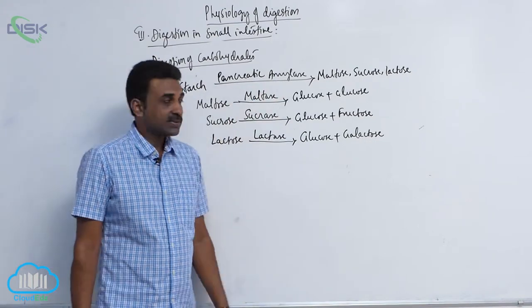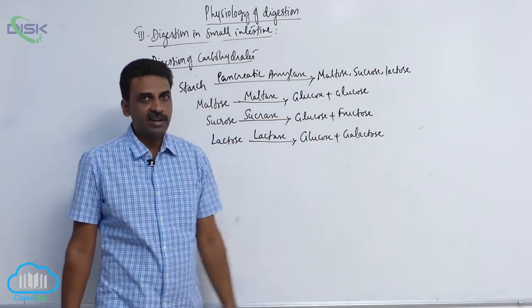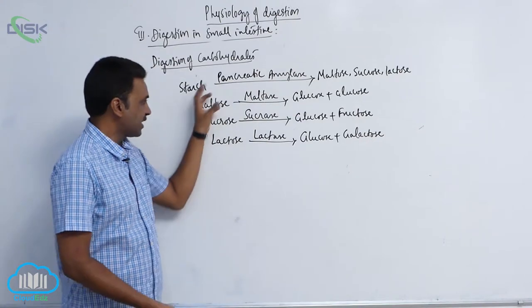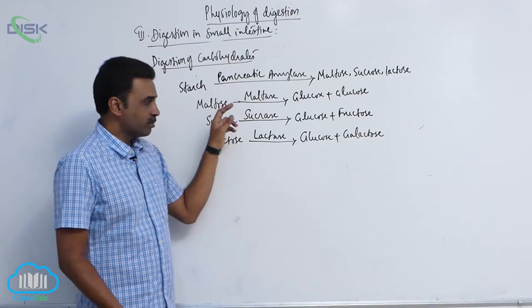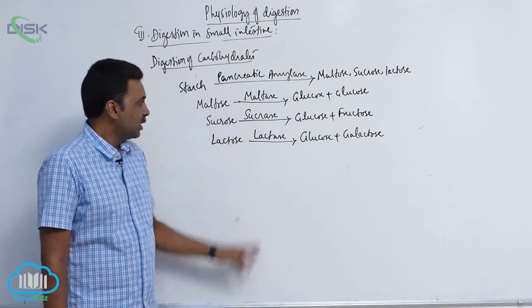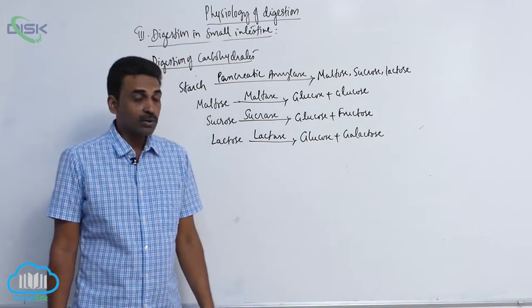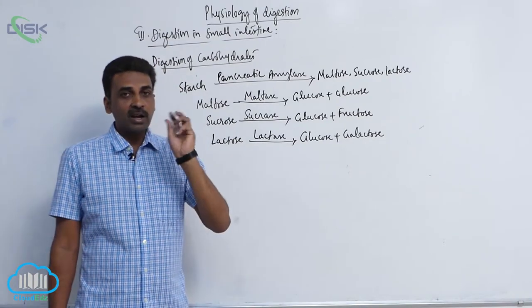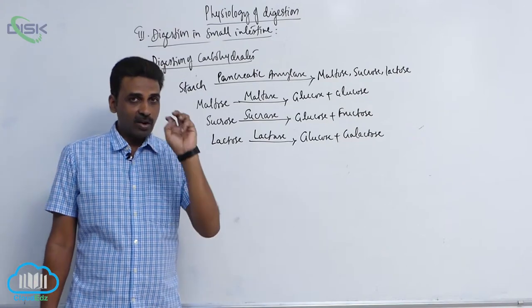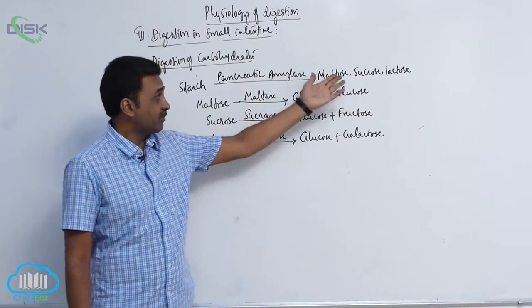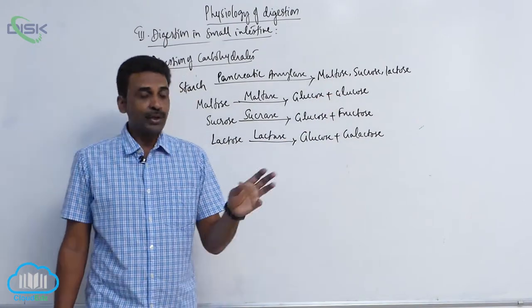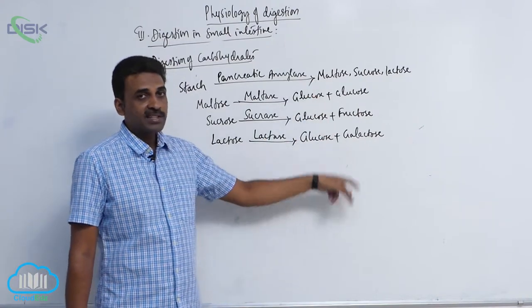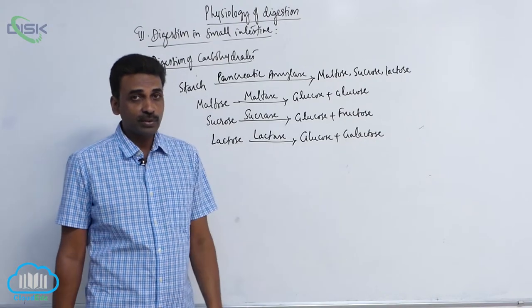Pancreatic amylase from the pancreas converts starch into disaccharides — maltose, sucrose, and lactose. Their respective enzymes in intestinal juice then act on those substances: maltase produces glucose and glucose; sucrase produces glucose and fructose; lactase produces glucose and galactose. Carbohydrate digestion is completed when complex starch is first converted into disaccharides and finally into simple sugars — glucose, fructose, and galactose.